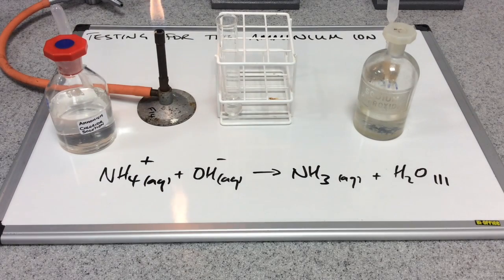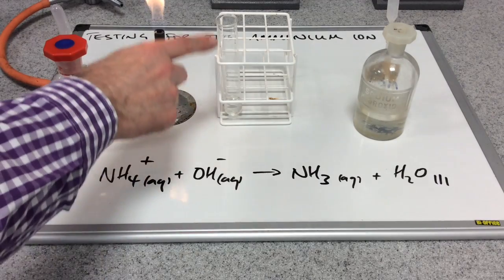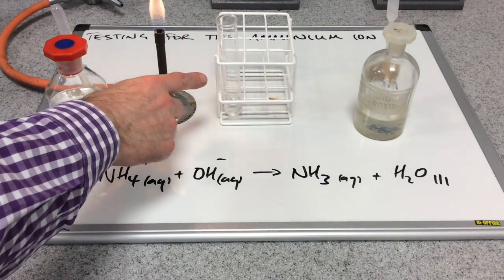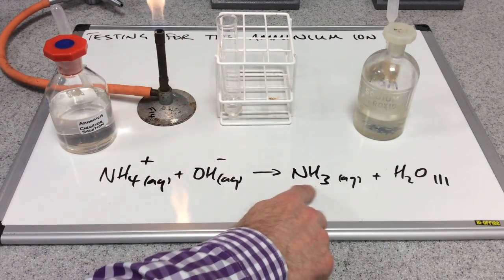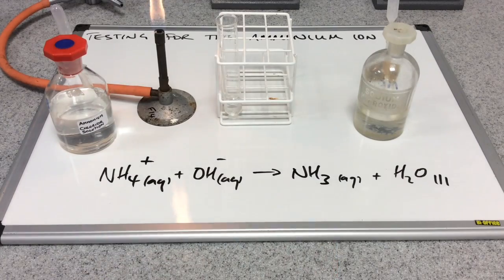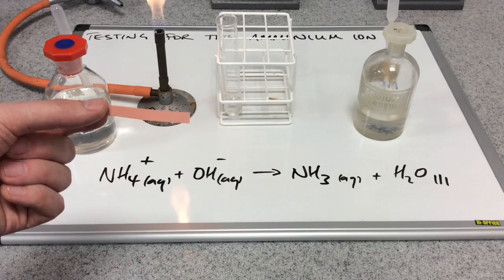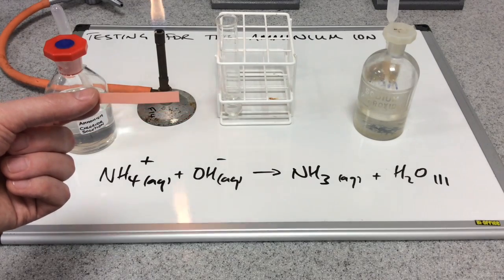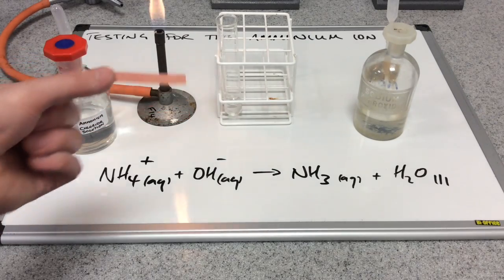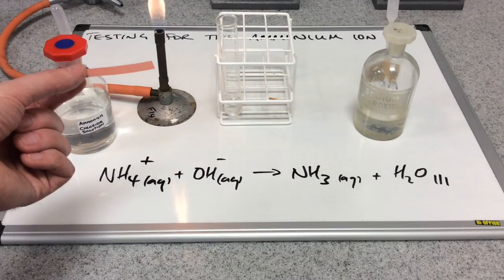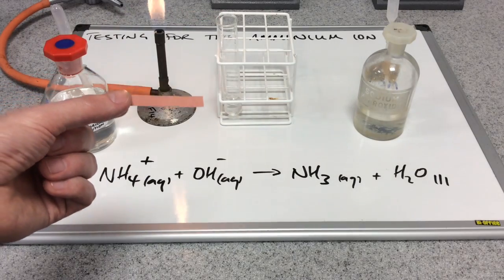You can see I've lit a Bunsen burner now, and that's because the next part of the test requires a source of heat. What I'm going to do is warm this test tube gently to turn the ammonia into a gas, and then I'm going to use this indicator paper. This is red litmus paper, but you could use universal indicator paper. I'm going to hold this in the mouth of the test tube and test the gas that comes off.